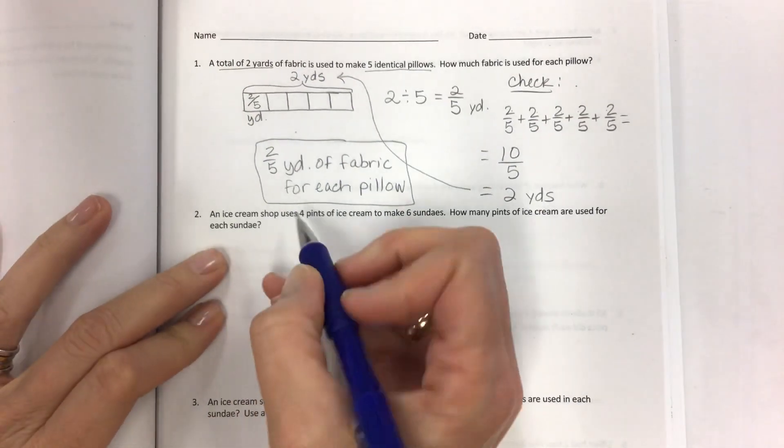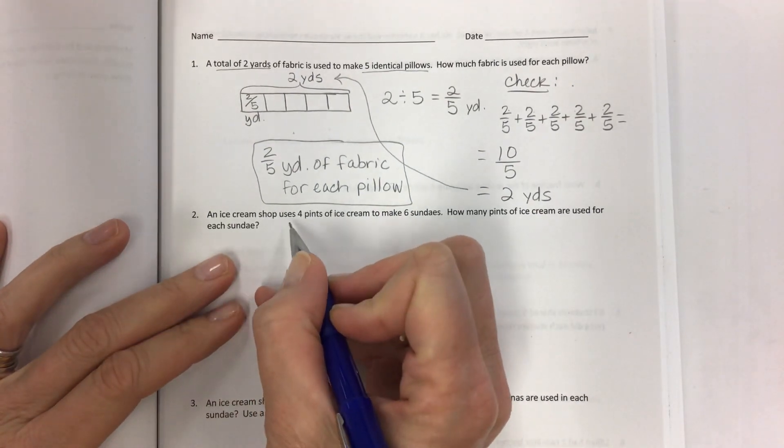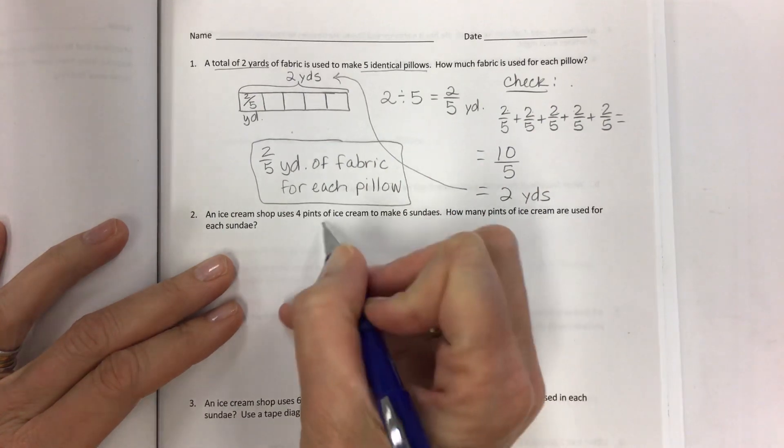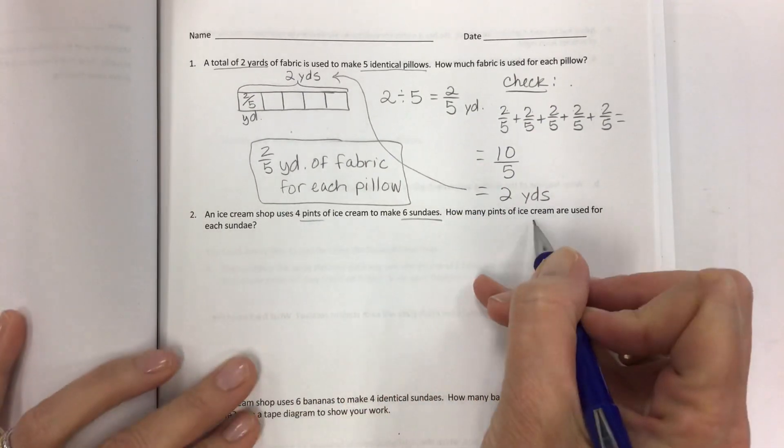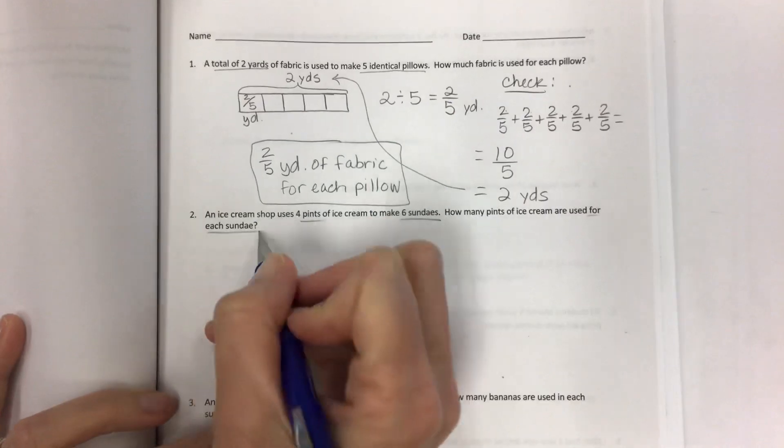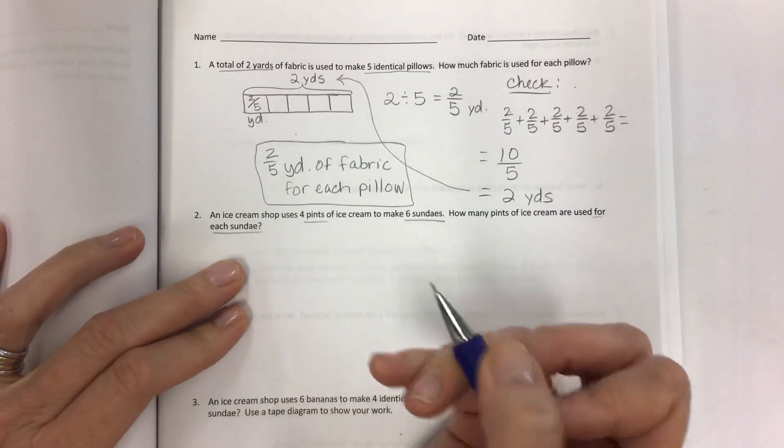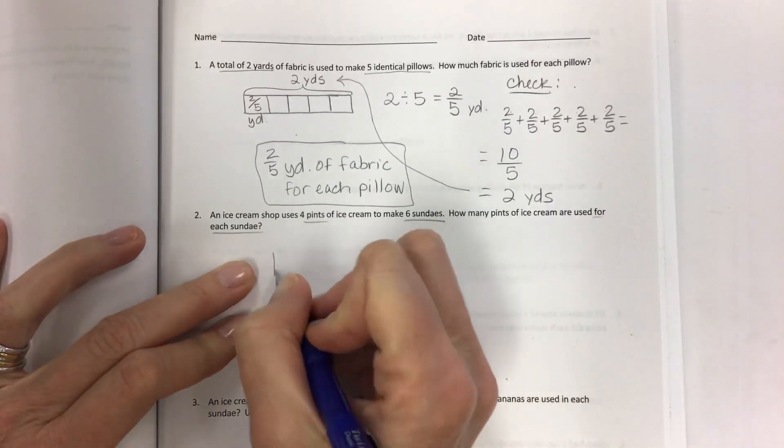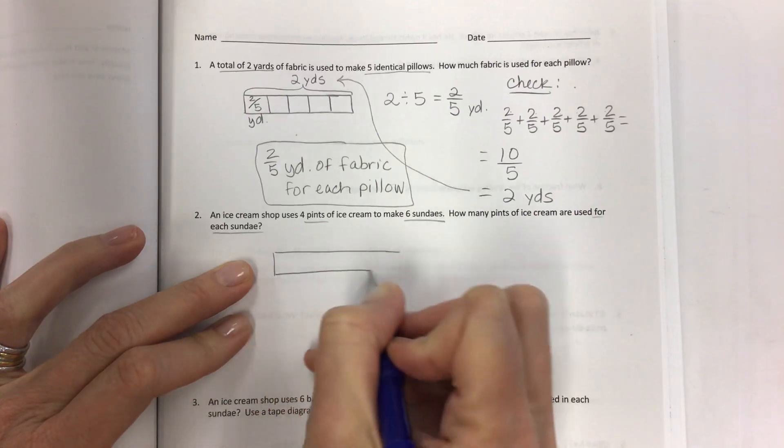An ice cream shop uses four pints of ice cream to make six sundaes. How many pints of ice cream are used for each sundae? So again, what's our total?